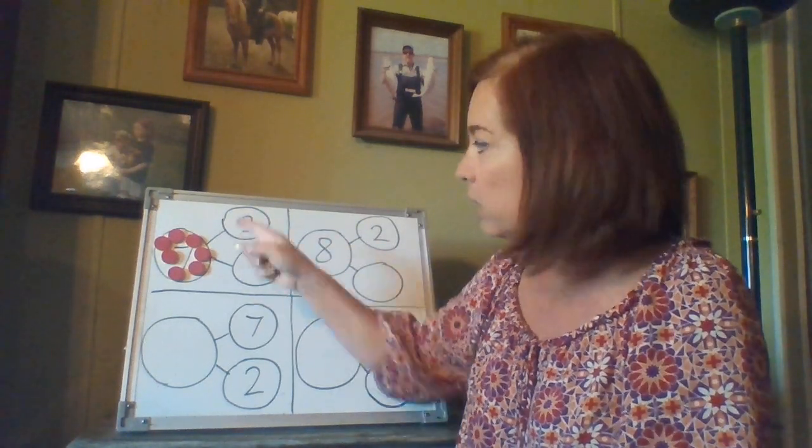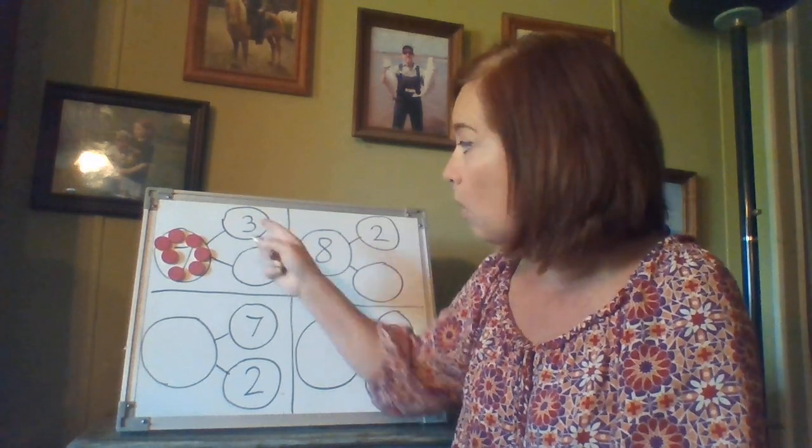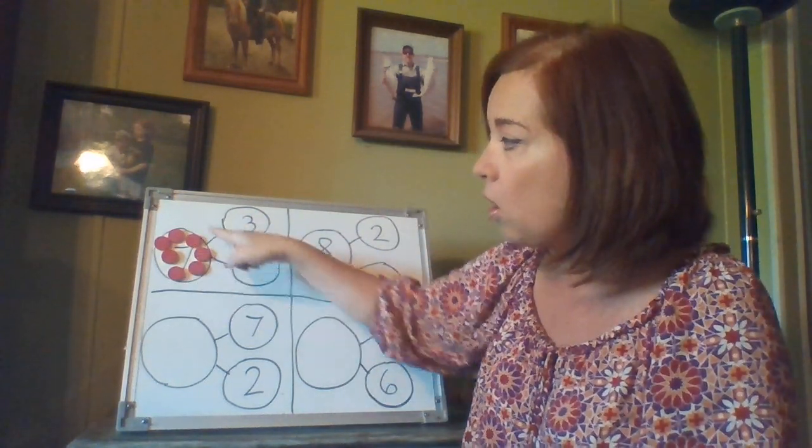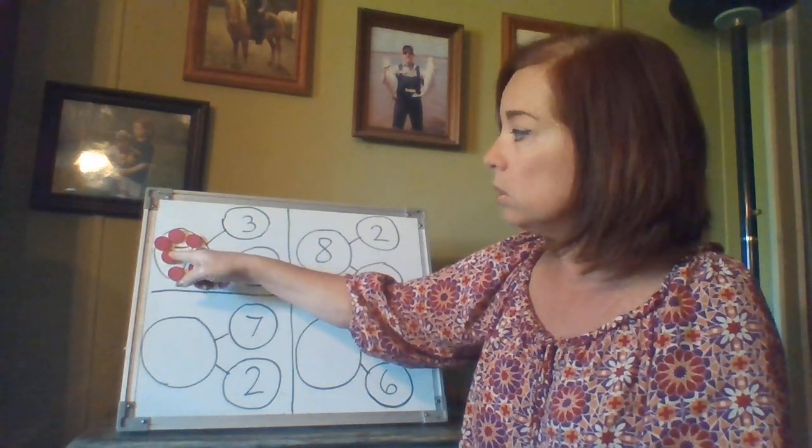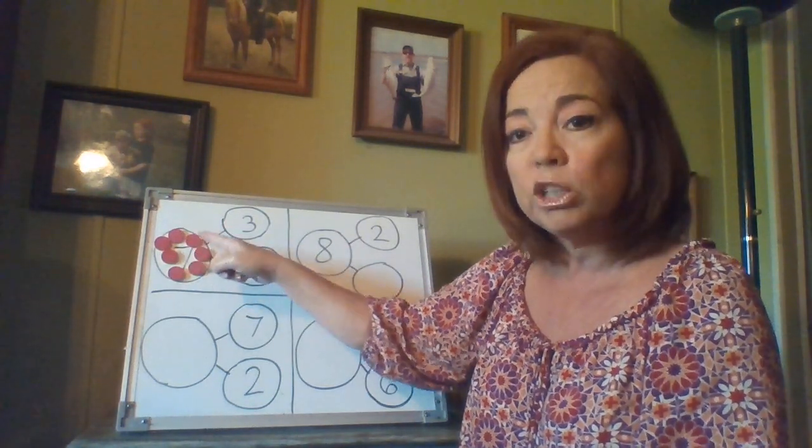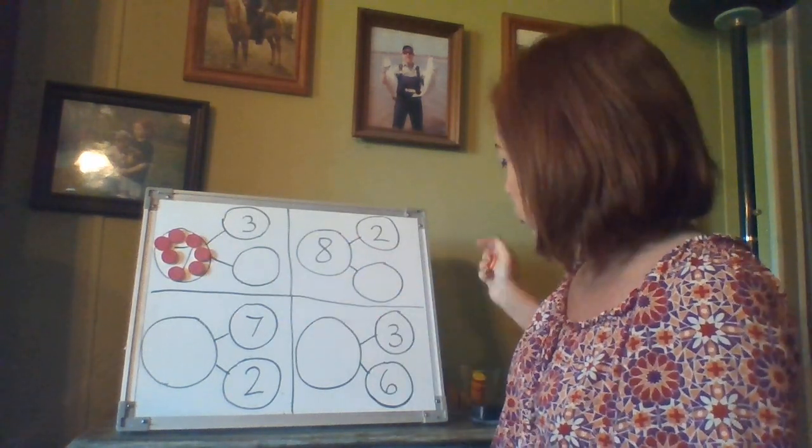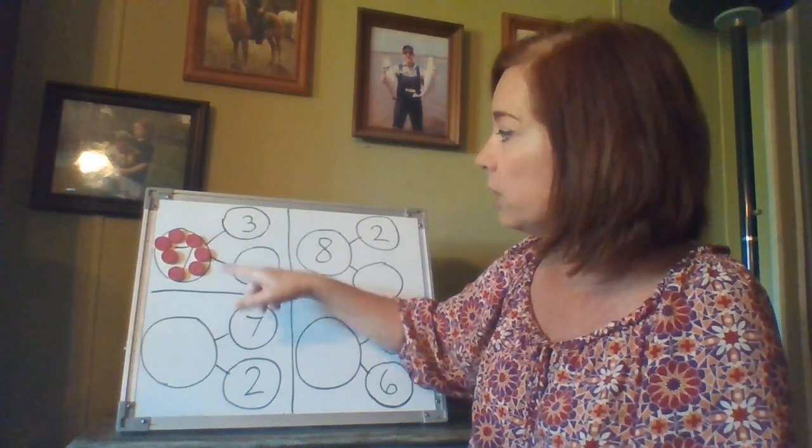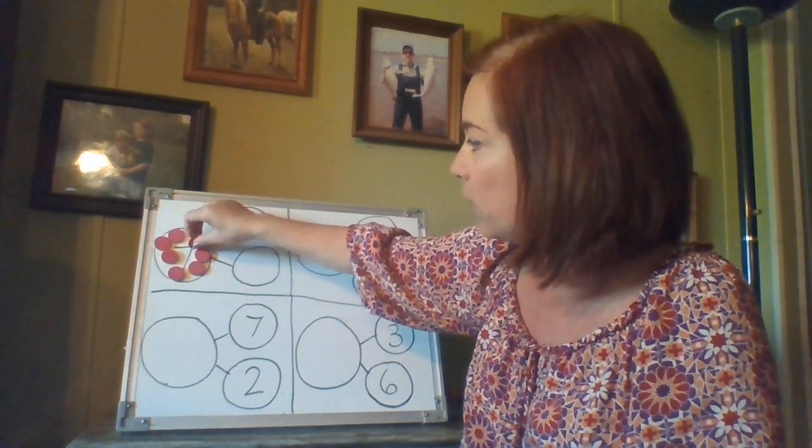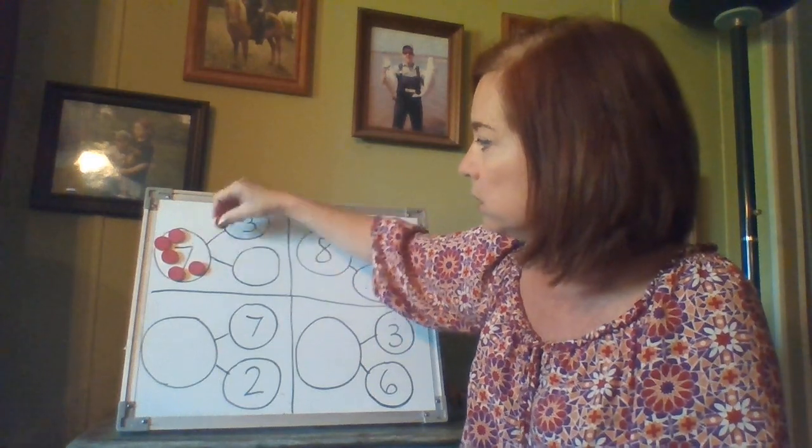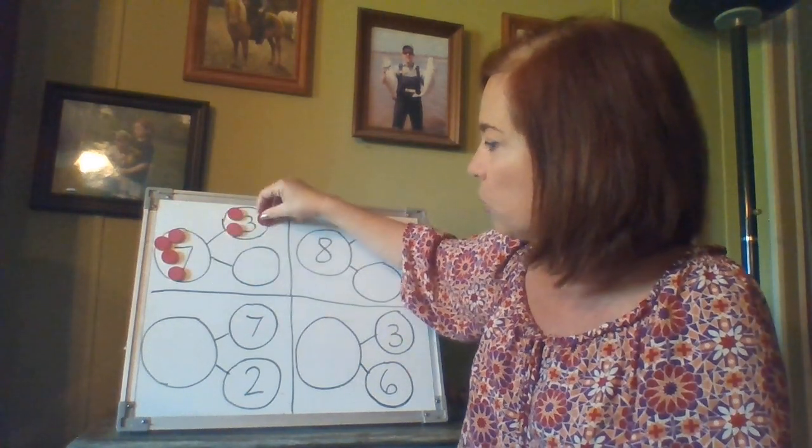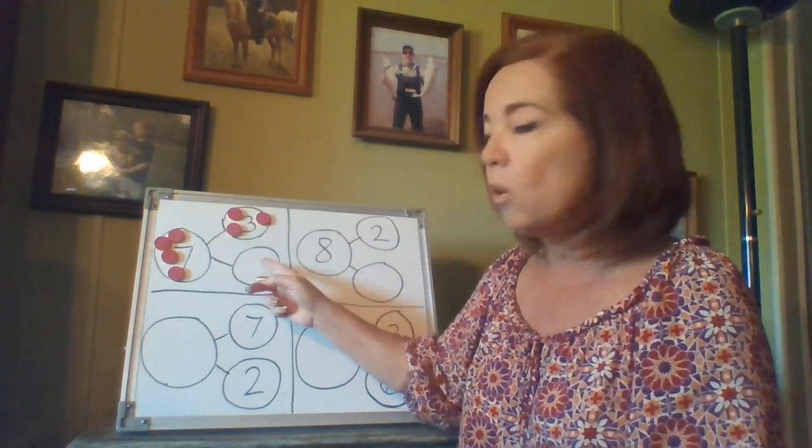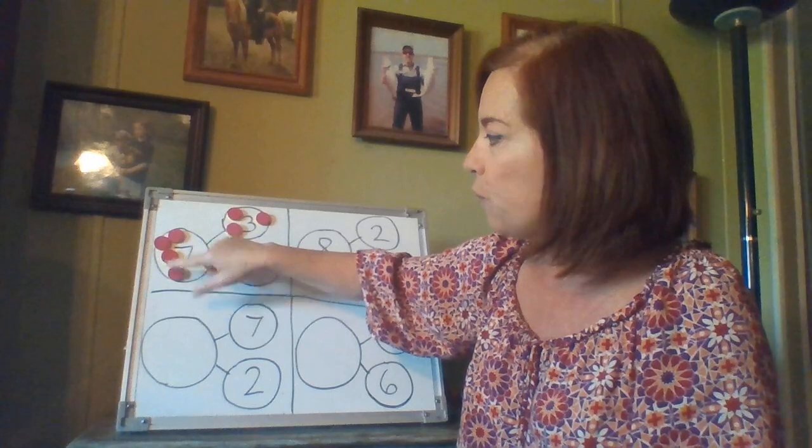Now I know boys and girls that it already tells me that there's going to be three in this part right here. So I'm not going to get three more boys and girls. All of our total, our manipulatives that we're going to use are always put in the one where the total is, which is the sum. The big one. Okay boys and girls? So there's seven. It says I have three in this one. So I'm going to take three out of there. One, two, three. Now I want to find out how many more is left to go into this one. One, two, three, four.